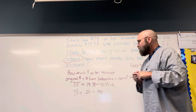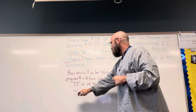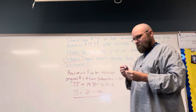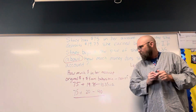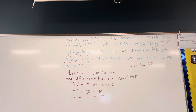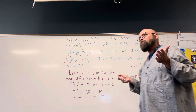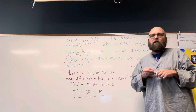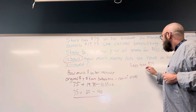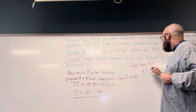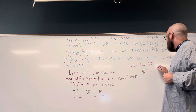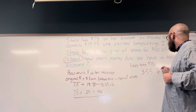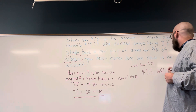Okay, so now I can do all of this in my head. 75 plus 20 is what? 95. 95 subtract 40 is what? 55. So my 'about' is $55 left in her account.